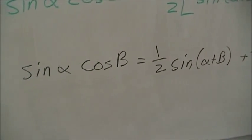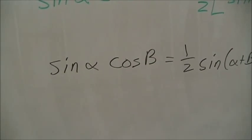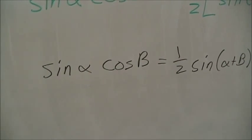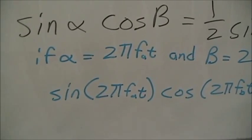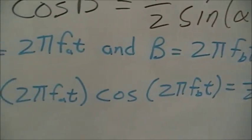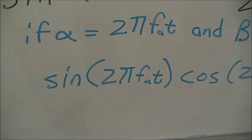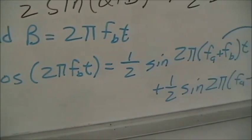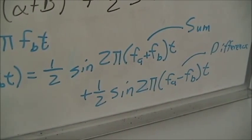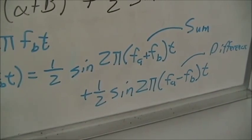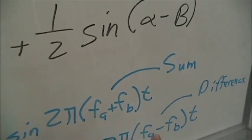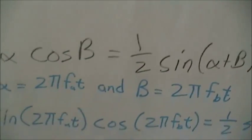If we further refine this for sinusoidal signals, we substitute alpha = 2*pi*fa*t and beta = 2*pi*fb*t. We end up with sine(2*pi*fa*t) times cosine(2*pi*fb*t) equaling two terms: one-half sine(2*pi*(fa+fb)*t) and one-half sine(2*pi*(fa-fb)*t) — the so-called sum and difference equations.